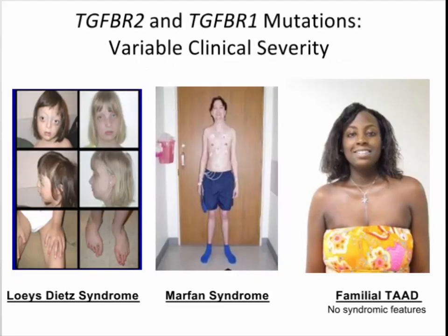The other important condition is Loeys-Dietz syndrome, due to mutations in the TGF-beta pathway — specifically TGFBR1 and TGFBR2. These patients have a wide range of phenotypic features: they can look very dysmorphic due to hypertelorism and craniosynostosis, they can look like classic Marfan syndrome, or the vast majority look completely normal. In TGF-beta pathway mutation patients, coronary artery dissections have been seen only in women. If you see a woman with a coronary artery dissection who has a brother with an aortic dissection, think about TGF-beta pathway genes.